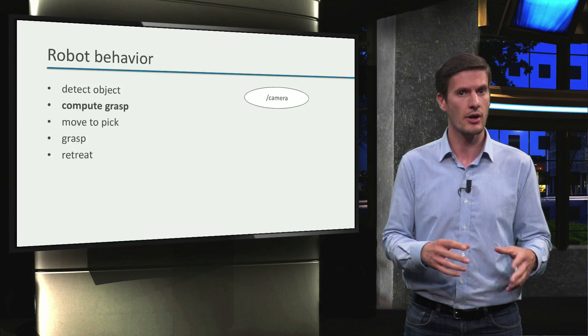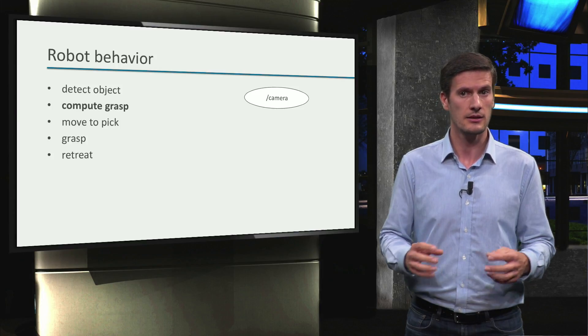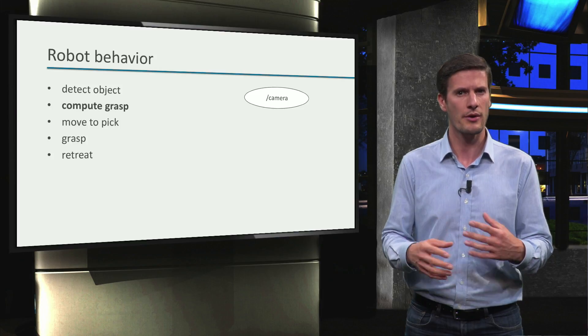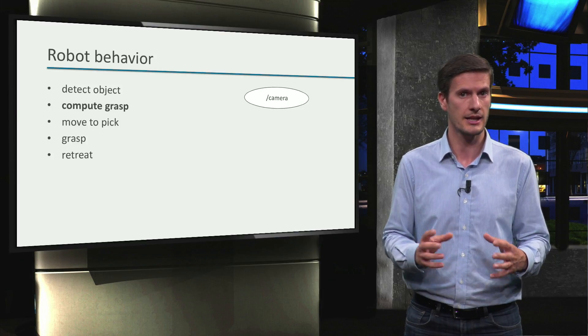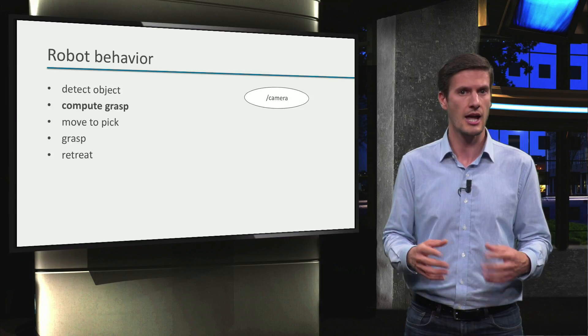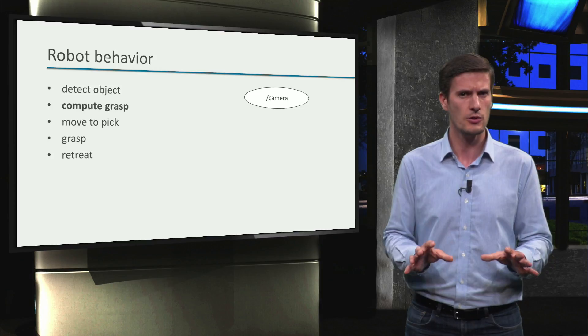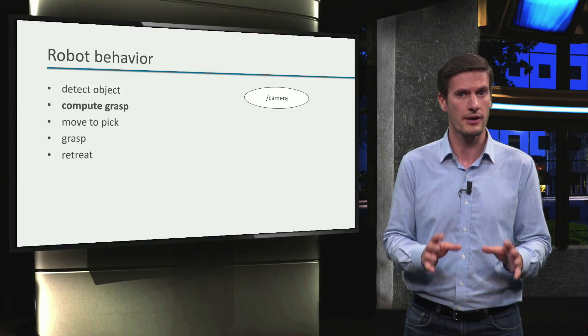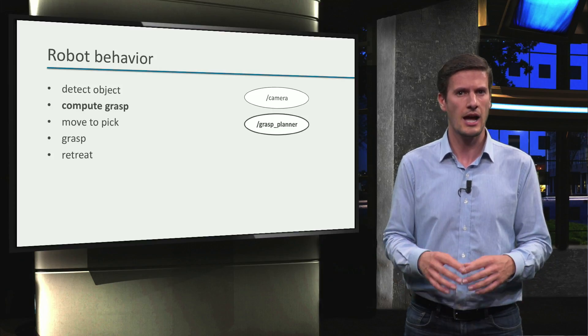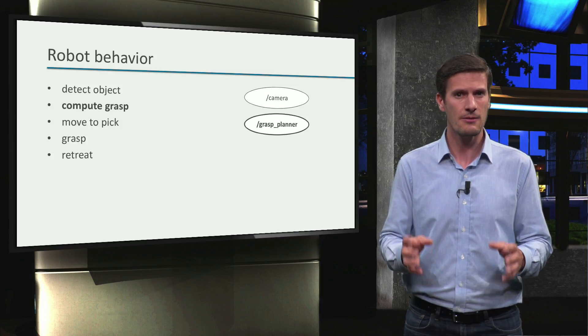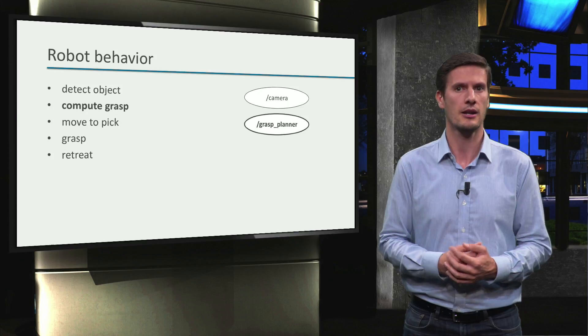The same goes for computing the grasp pose to pick the object. This can actually be a very complex problem in robotics, requiring advanced deep learning or motion planning techniques, such as those used in the Amazon challenge. We saw a video of it in the intro of this week. But let's assume we have a package available with a node, GRASPLANNER, that outputs the joint values for the robot arm to pick the object, given as input the pose of that target object.